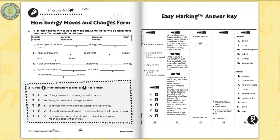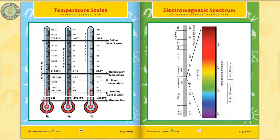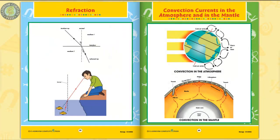The easy marking answer key works by lining up perfectly with the matching question pages. Six color mini posters complete the resource, including a review of convection currents in the atmosphere and in the Earth's mantle.